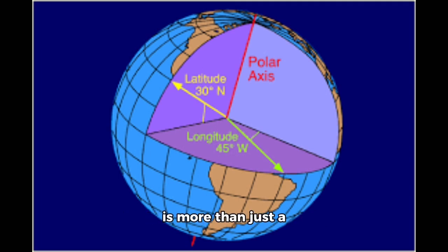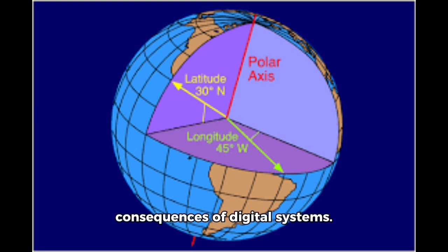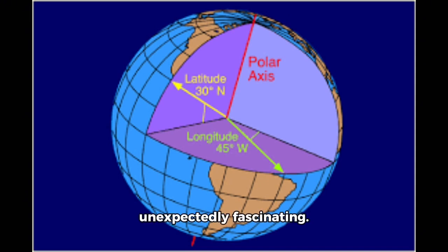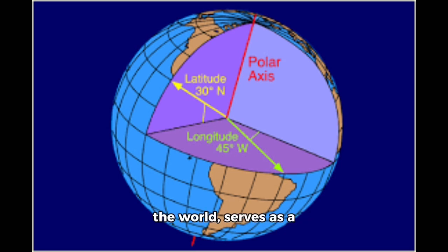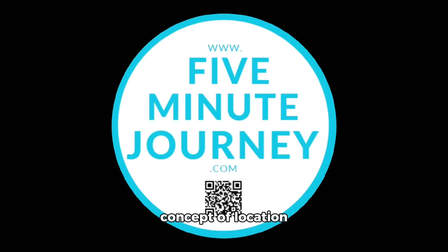The story of Null Island is more than just a technical anecdote. It's a reflection of our relationship with data and technology. It highlights the importance of data quality, the challenges of data management, and the unexpected consequences of digital systems. It's a reminder that even in the seemingly precise world of digital information, errors are inevitable — and sometimes those errors lead to the creation of something unexpectedly fascinating. Null Island, the non-place at the center of the world, serves as a constant reminder of the human element in the digital landscape, a place where data goes to die and where the very concept of location becomes a playful paradox.